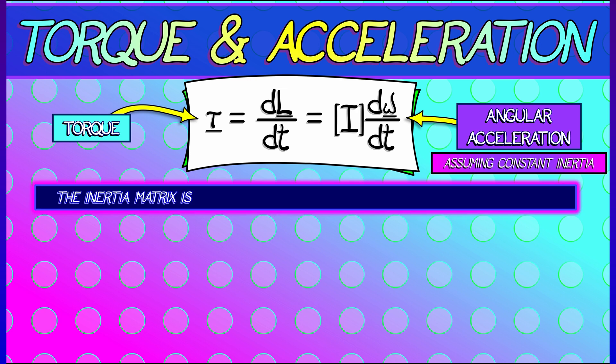From this, we can interpret the inertia matrix as the measure of resistance to angular acceleration. And so that's kind of cool.